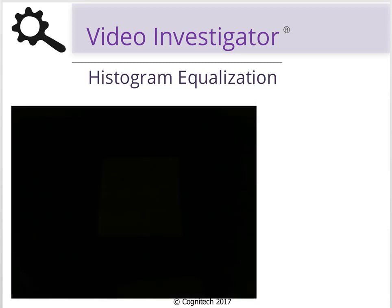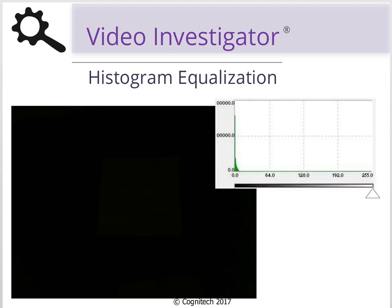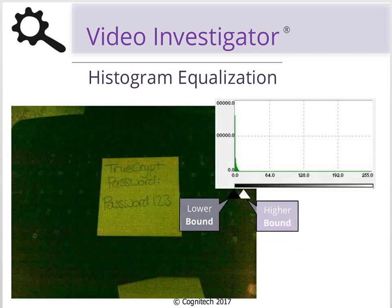By looking at this image, we would expect that all of the pixels will have a tonal value of 0. However, by analyzing the image's histogram, we can see that there are some pixels in this image which are not fully black. By adjusting our histogram's bounds, we can enhance the visibility of this image.